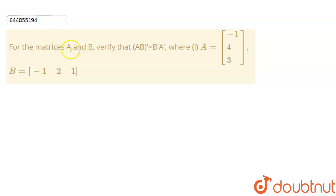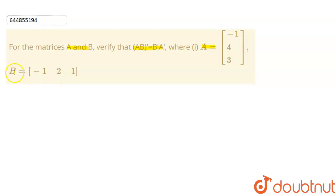So this is the question: for the matrices A and B, verify that (AB)ᵀ = BᵀAᵀ, where A is equal to [-1, 4, 3] and B is equal to [-1, 2, 1].